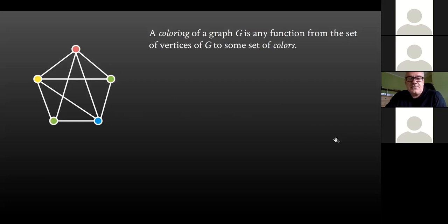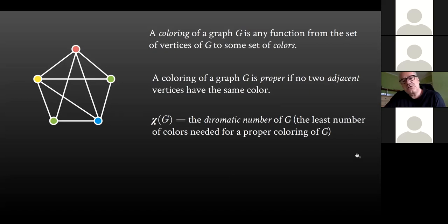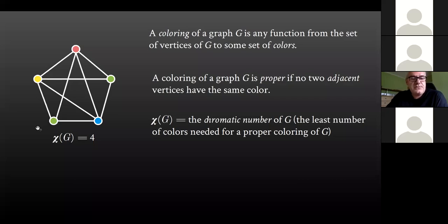A coloring is proper if no two adjacent vertices have the same color. So on this example, we see a proper coloring of this example graph. The parameter related to this concept is the chromatic number of a graph, which is the smallest number of colors needed for such a proper coloring. We see that this graph here has chromatic number equal to four. We see a proper four-coloring and this is the minimum possible because there is a clique of four vertices, each pair connected by an edge, so we really need four colors.